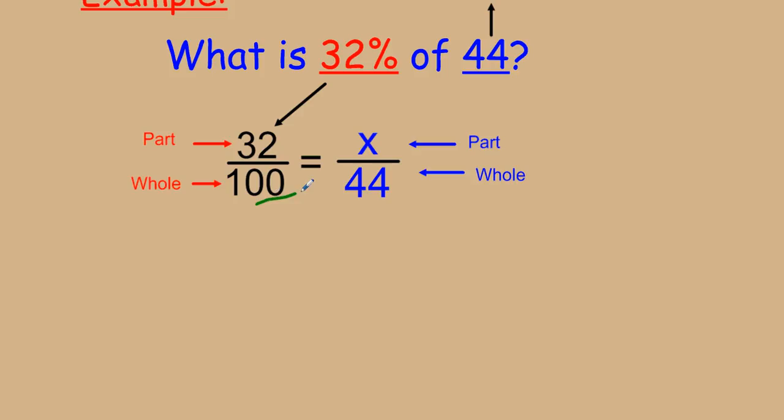A proportion tells us that if two numbers are proportional, which here we have two ratios that are equal, and that's the definition of a proportion, then the cross products will be equal. So 100 times x will actually equal the same value as 32 times 44.